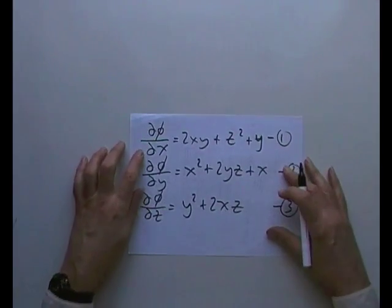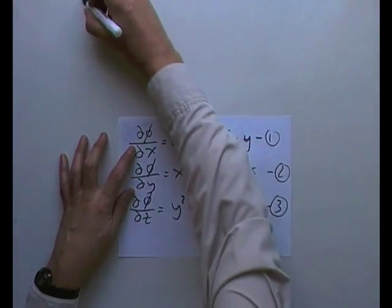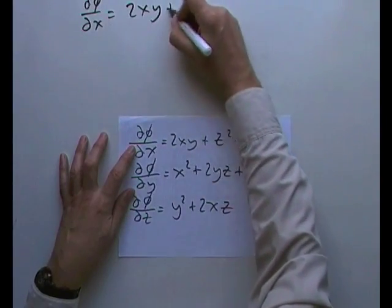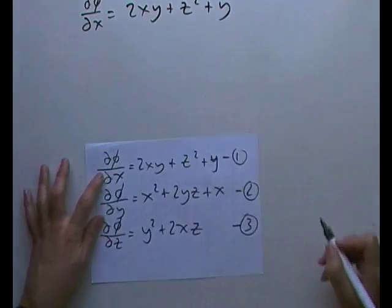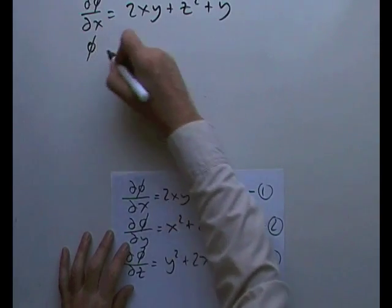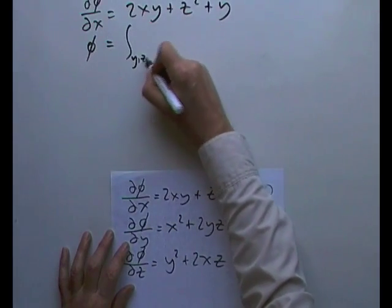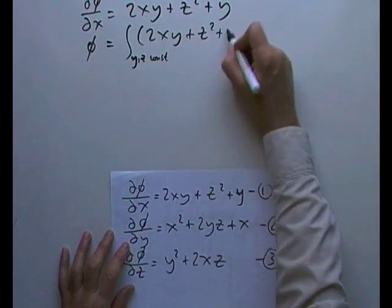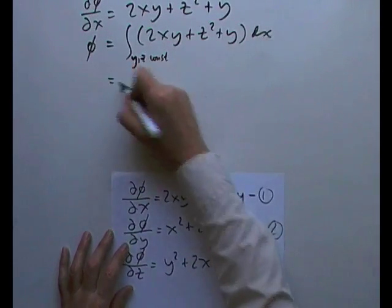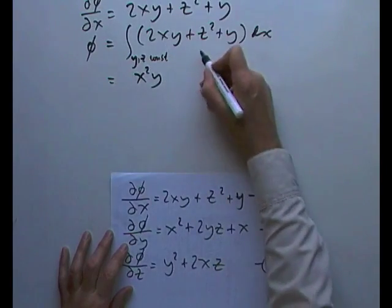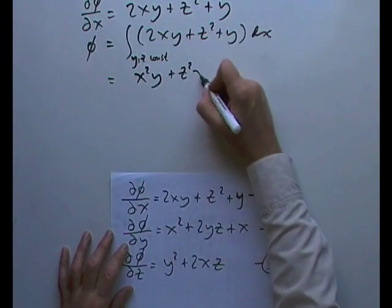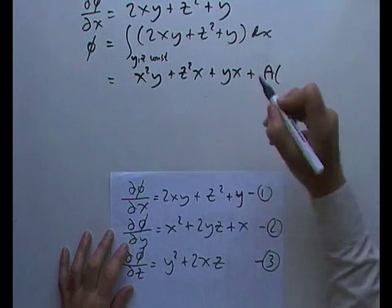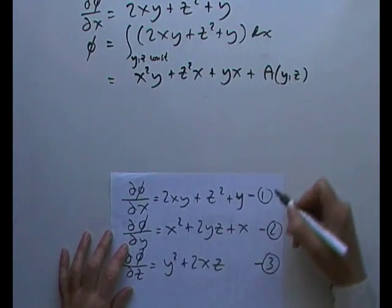Right, having copied that down, we've got this. Right, integrating that up with respect to x, so that means keeping the y and the z constant. Integrating this up, 2xy plus z squared plus y dx will give me, that'll go back up to x squared y, that'll be z squared times x, that'll be y times x, plus some unknown constant, not involving x, so some function of y and z.